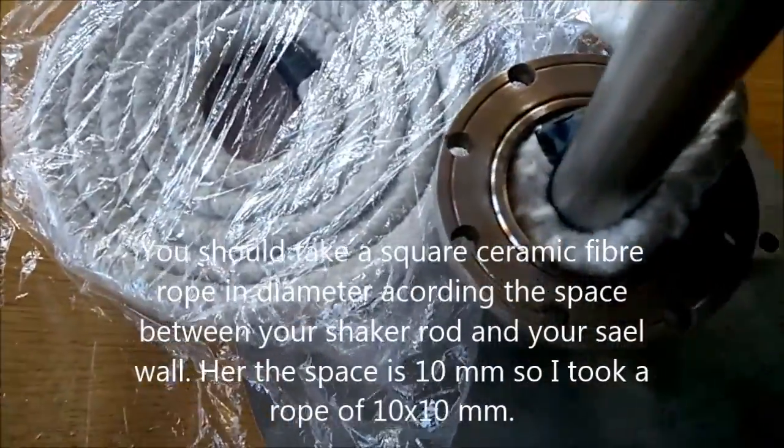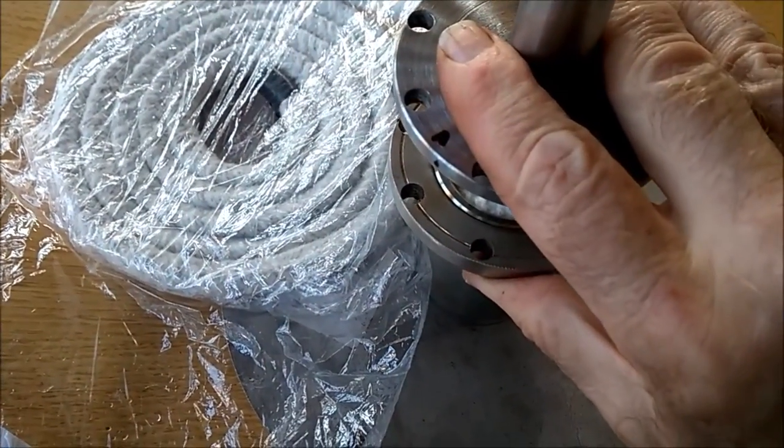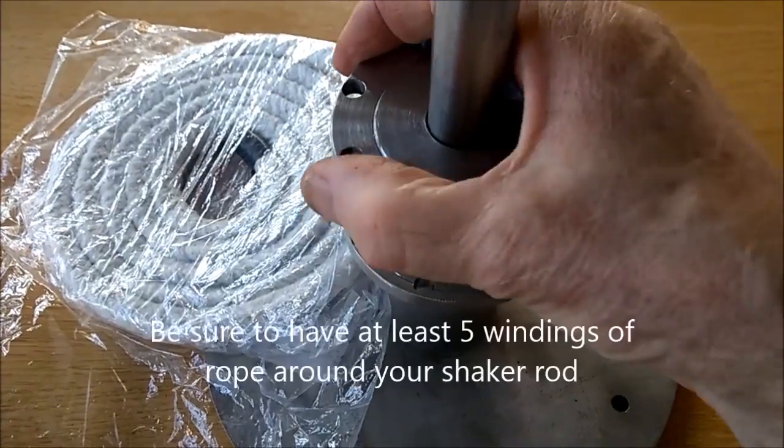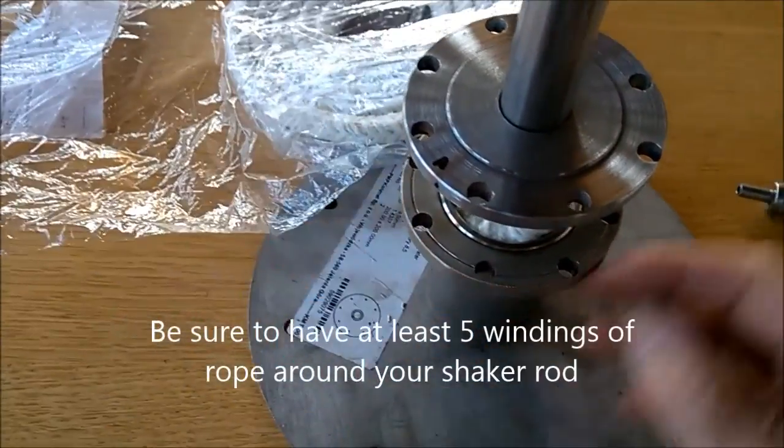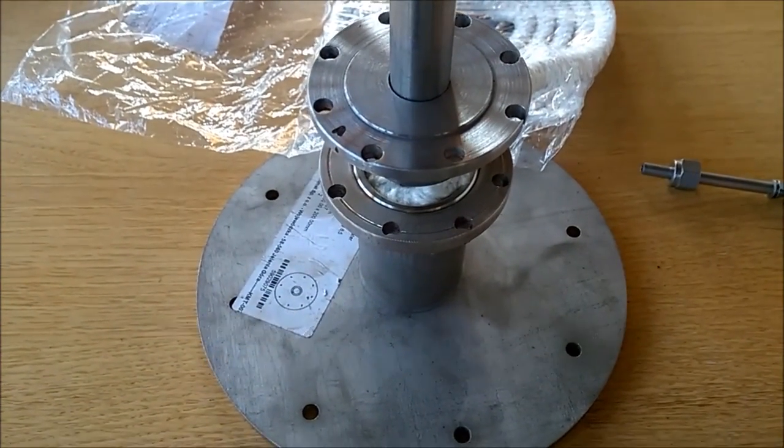And on top of that goes this which presses the rope. Let's say you have screws from here to here which presses the rope airtight around the rod. That's how I do it.